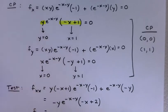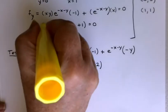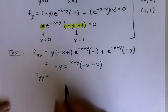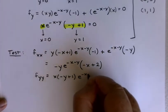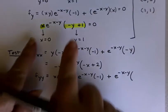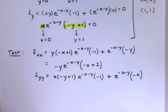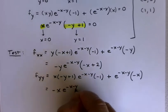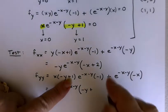I would expect f_yy to turn out kind of similar. Using the same trick, I'd have x(-y+1) times the derivative of the exponential, plus the exponential times x times negative 1. Factoring out -x·e^(-x-y), I'd have (-y+1) plus another plus 1, so (-y+2).